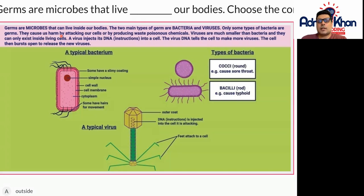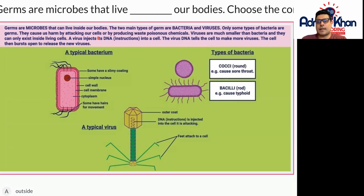Germs and microbes can live inside our bodies. The two main types of germs are bacteria and viruses. Only some types of bacteria are germs — they cause us harm by attacking our cells or by producing poisonous waste chemicals. Viruses are much smaller than bacteria and they can only exist inside living cells.